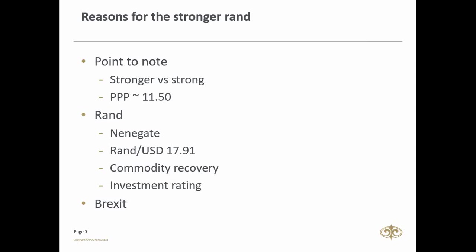The PPP is an economic theory that compares different countries' currencies through a market basket of goods approach. According to this concept, two currencies are in equilibrium or at par when a market basket of goods is priced the same in both countries. Looking at the PPP currently for the rand against the dollar, it is roughly 11 rand 50.